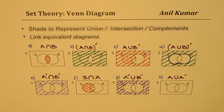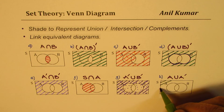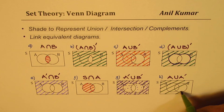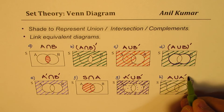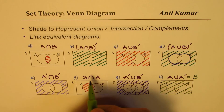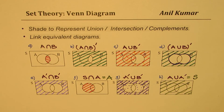The last one is the union of A and its complement, A∪A'. The union of A and its complement is the whole universal set, so we shade everything. You find that this is equal to the universal set S, and A∩S is equal to the set A.